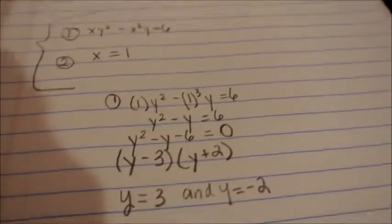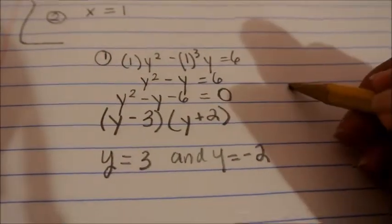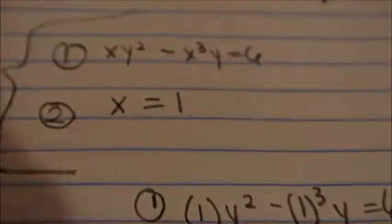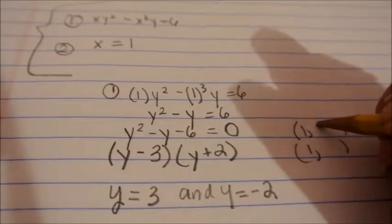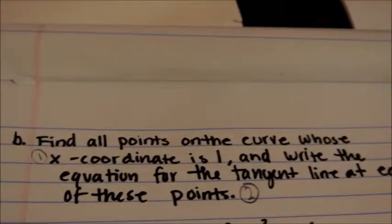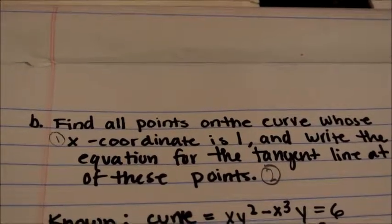We found the y-coordinates. Now, we need to place them into points. So, the x is given, x is 1. So, both these are 1. And the y is 3 and negative 2. So, we are done with part 1. Find all points on the curve whose x-coordinate is 1.